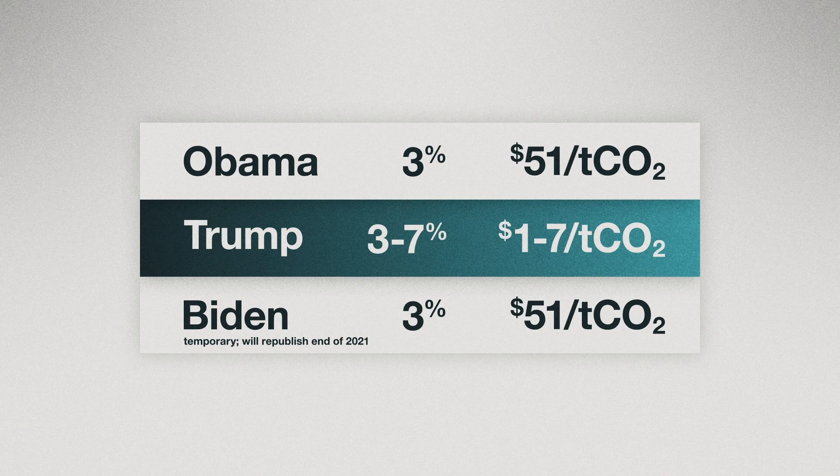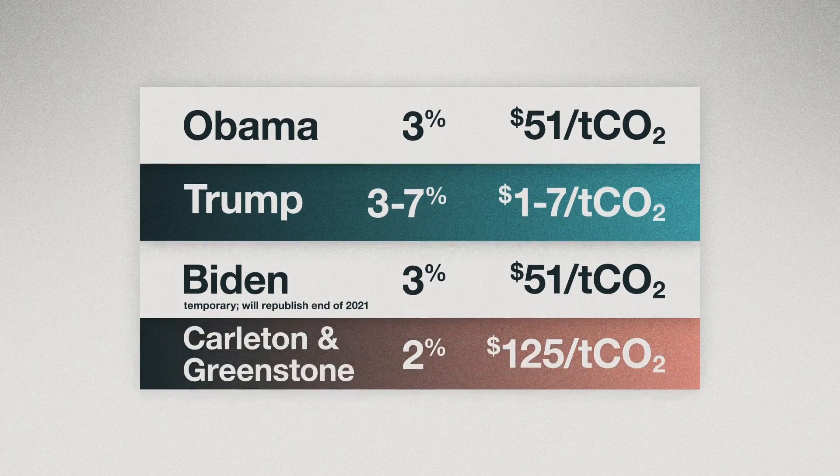According to Tama Carlton's research, a more accurate discount rate would be no higher than 2%, which would put the social cost of carbon at around $125 per ton.